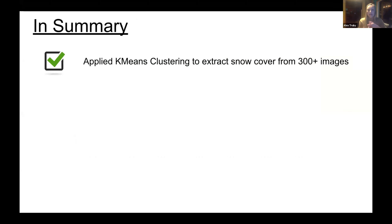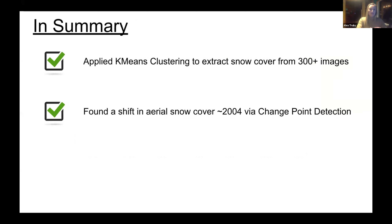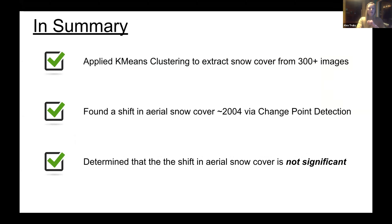In summary, I applied k-means clustering to extract snow cover from over 300 images, found that there was indeed a shift in aerial snow extent occurring around 2004 via binary segmentation change point detection, and then following that up with a separate hypothesis test, although there was a shift, it was not a significant shift. That's likely due to the fact that we were limited to about 30 years of data, because satellite imagery prior to the 1980s wasn't super great.